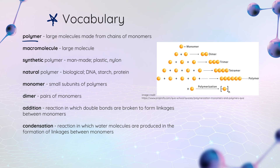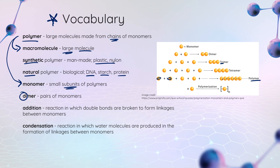Polymers are very large molecules made from chains of monomers — here's a polymer, here are my monomers, and when I chain them together we have a polymer. Polymers are macromolecules, which just means a really big molecule. Some polymers are synthetic, meaning man-made — examples are plastic and nylon. We also have naturally occurring polymers that are biological in nature: DNA, starch, and protein are all examples. Monomers are the single subunits that make up polymers. A pair of monomers together is a dimer; we can also have trimers, tetramers, and octamers.